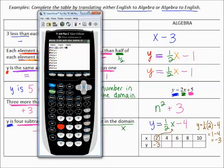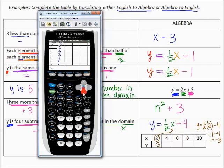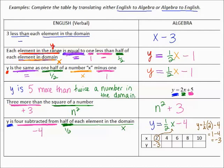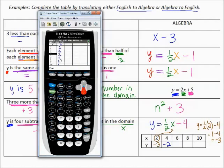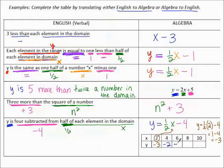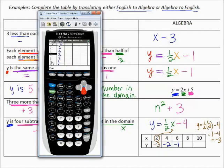Then go to the table — second table. I want the X values 4, 6, 8, and 10. Scrolling down: 4 gives me −2, so I write that in my table: 4, −2. Next: 6 gives −1. Then 8 gives 0, and 10 gives 1.